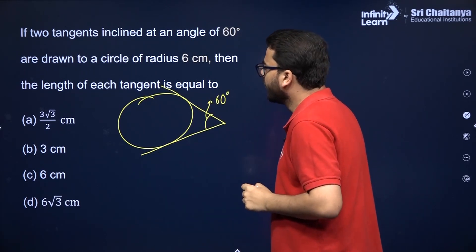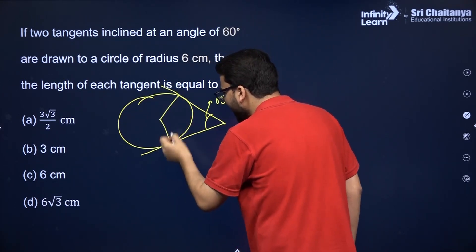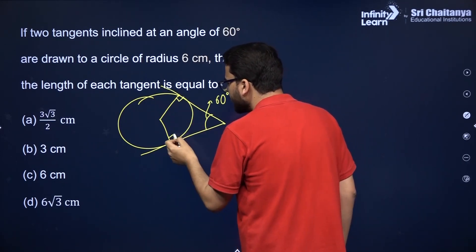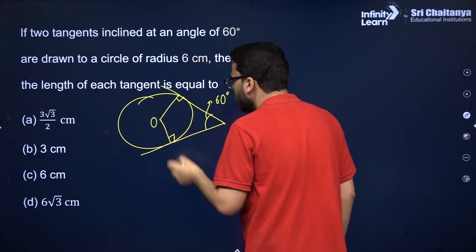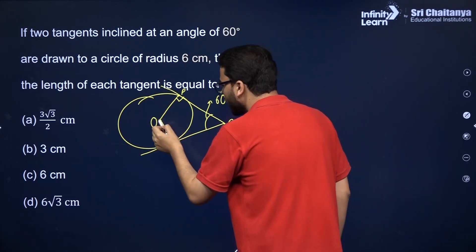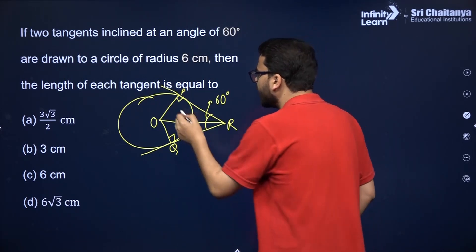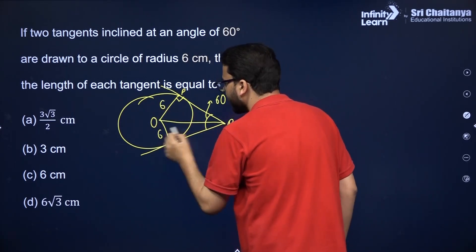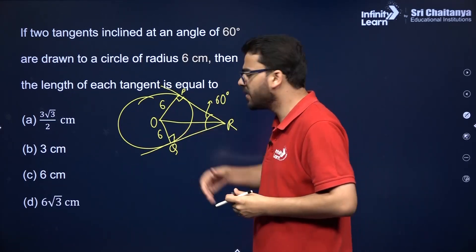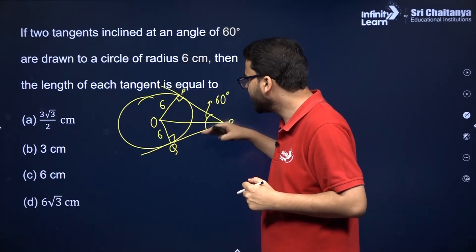We have a circle and from an external point two tangents are drawn, inclined at 60 degrees. The radius is 6 centimeters. We join the corresponding radii through the points of contact. Both angles at the points of contact are 90 degrees. Label the center O, external point R, and the two points of tangency P and Q.